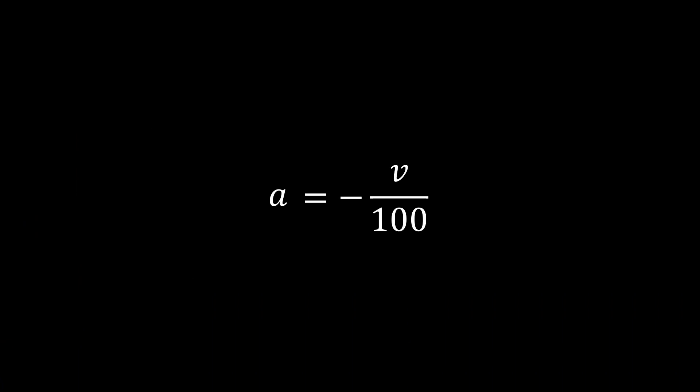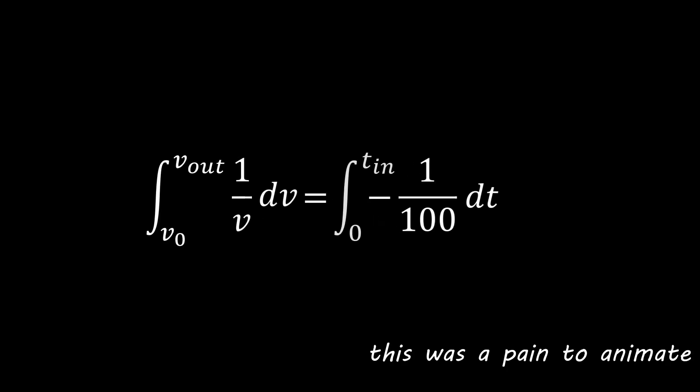So, acceleration at a specific point in time is equal to the tiny change in velocity over the tiny change in time. We put this in the equation, so we have a new equation. This is a first degree differential equation. But thankfully, this is one of the easiest ones. We divide both sides by V and multiply both sides by dt, so now we got this. In order to get rid of dv and dt, we integrate both sides of the equation.